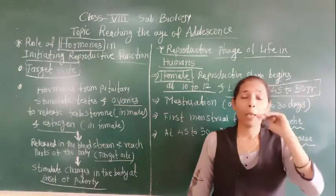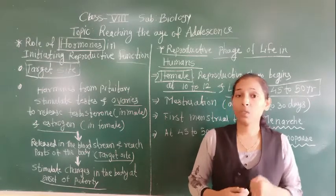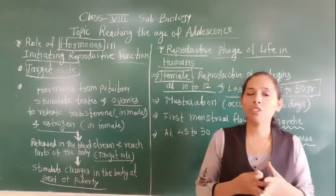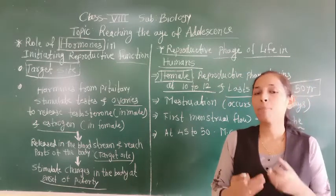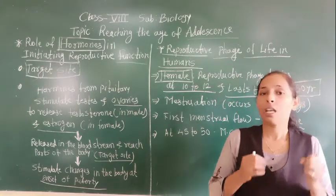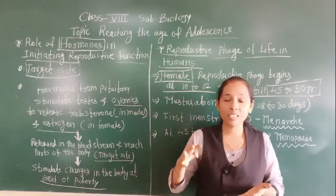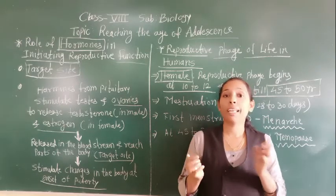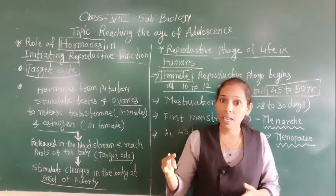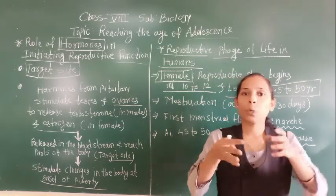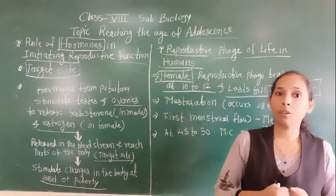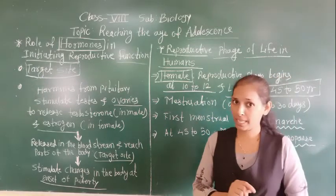Once the females get mature, the ovaries also get mature. One of the ovaries starts to release an egg. At the same time, the uterus wall becomes thick. Once the ovaries release the egg into the fallopian tube, if it gets fertilized, it gets converted into a zygote and then the zygote gets embedded into the uterus and starts to develop. That is called pregnancy.